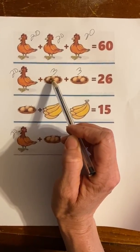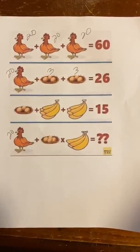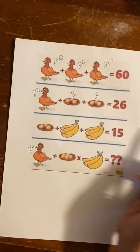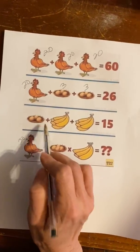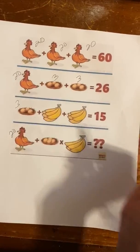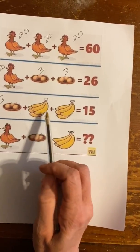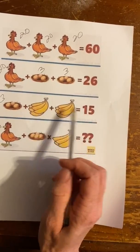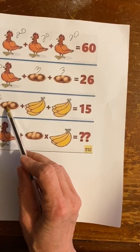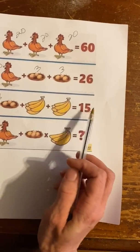Pay attention: there are also 3 eggs in each nest. Keep that in mind because it comes in handy later. So a nest of eggs equals 3. Now we have some bananas — nest of eggs plus bananas plus bananas equals 15.